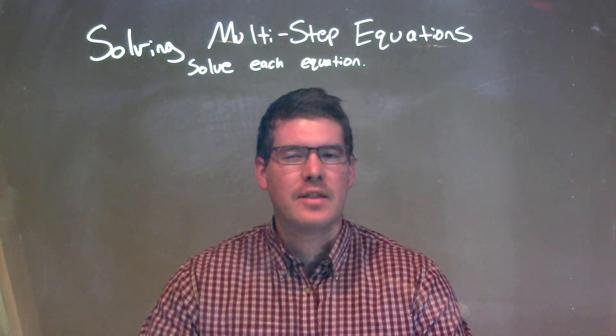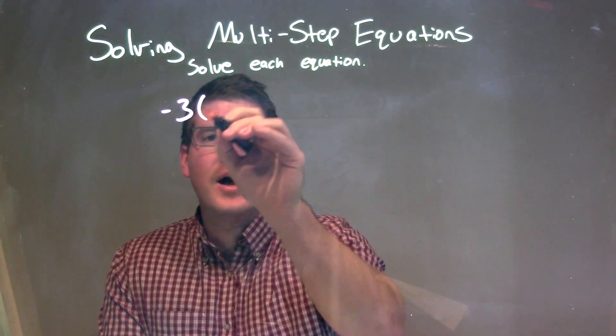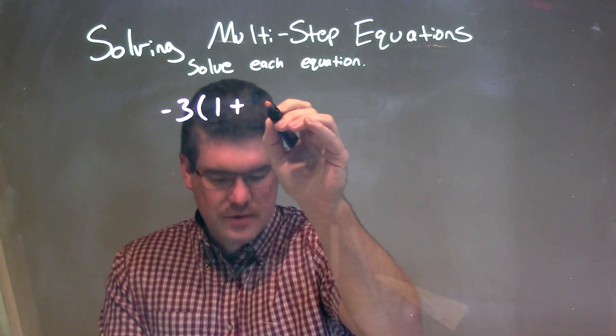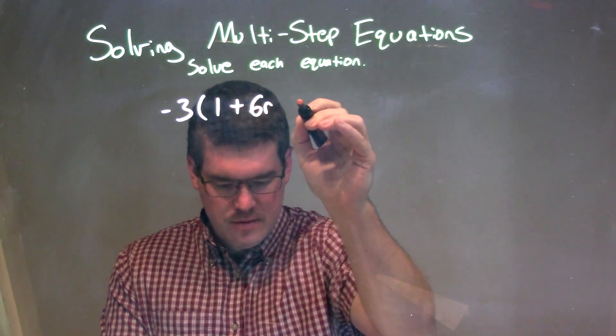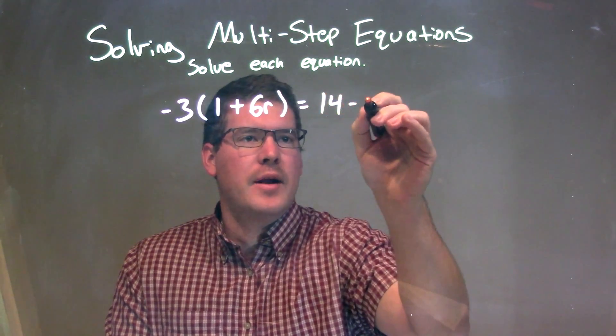So, if I was given this equation, negative 3 times 1 plus 6r equals 14 minus r.